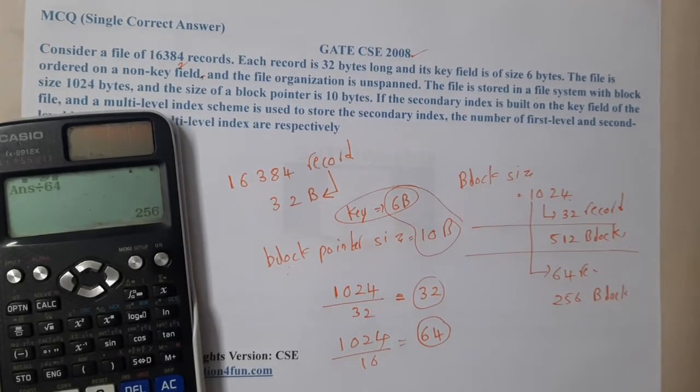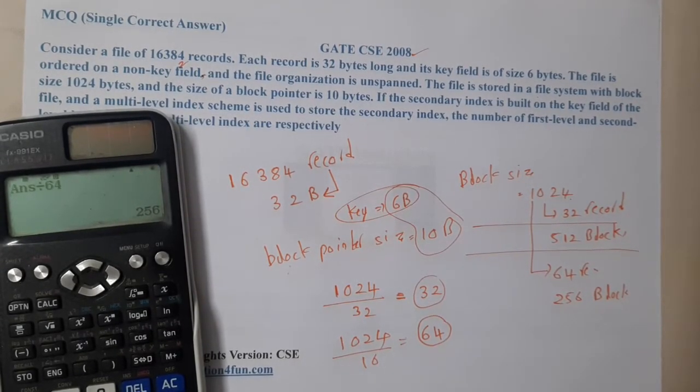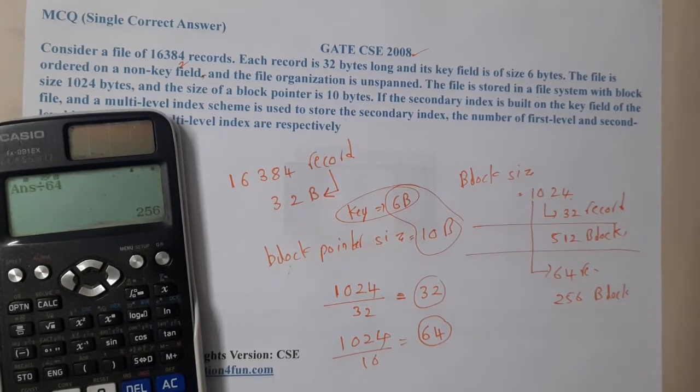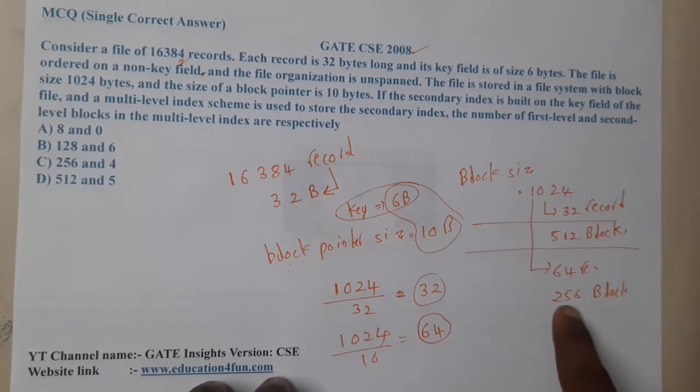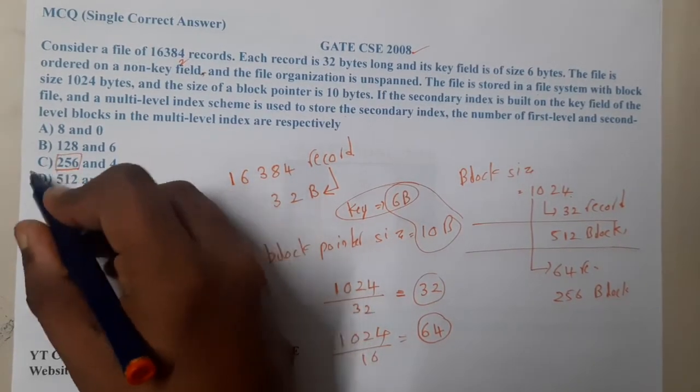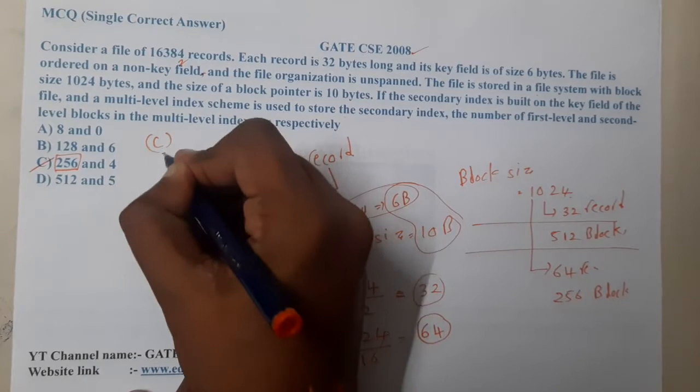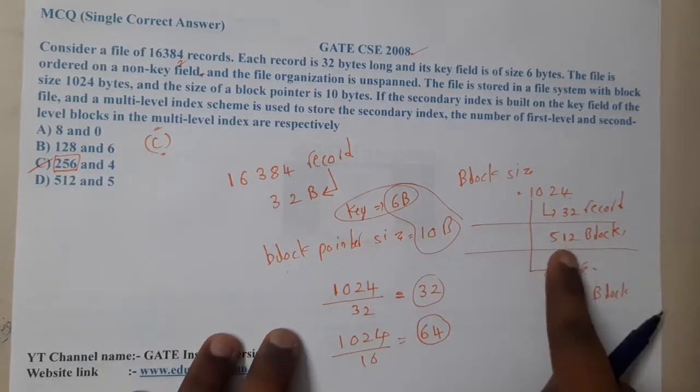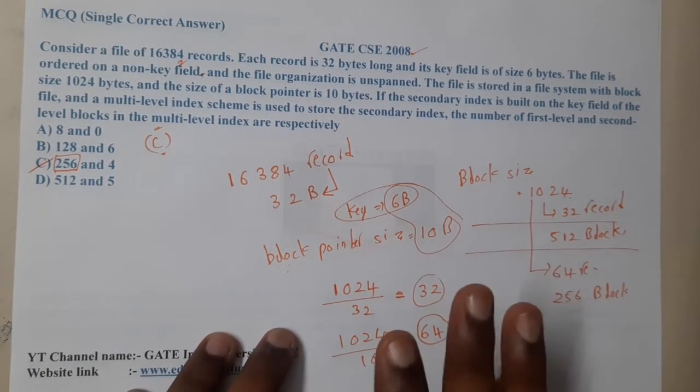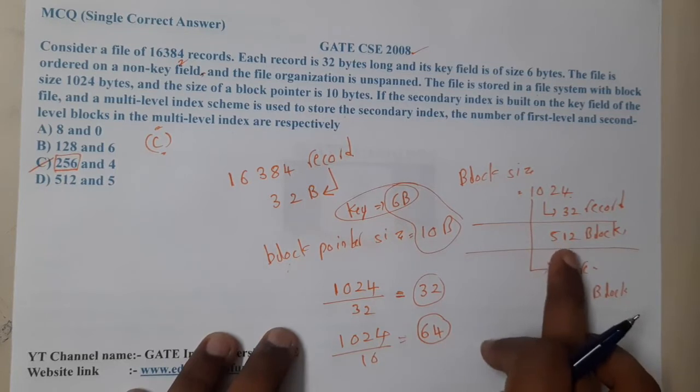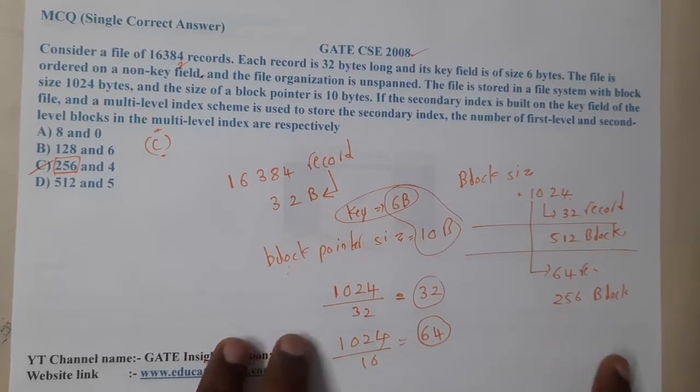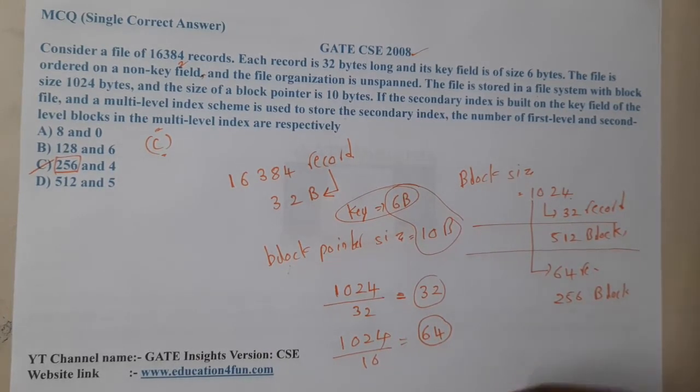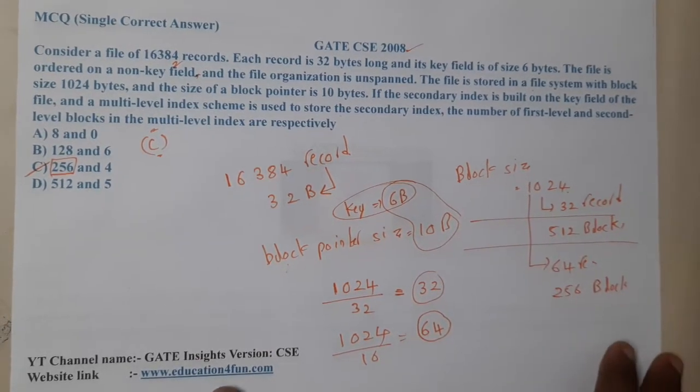Now I think everyone is clear with respect to main file and indexing file. With this I think we can conclude the first part as 256, right? So just with that I can answer C as the correct answer. The only reason why I calculated without indexing is just for you to understand - these are the number of blocks without indexing and these are the number of blocks with indexing. Now let us try to do second level of indexing.